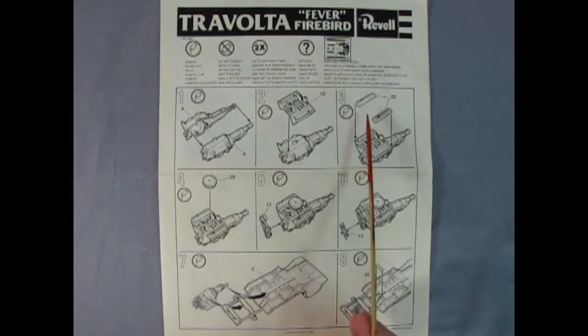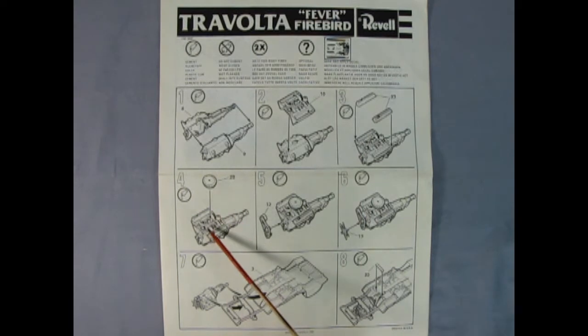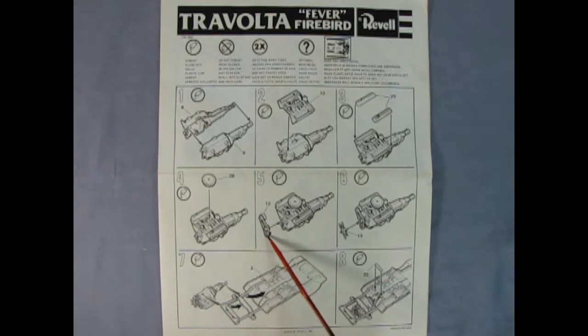Here we have our chrome valve covers dropping in place. We've got our chrome air cleaner dropping on top of our carburetor. Then here we've got our fan belts, pulleys, and alternator with the fan popping in place. The entire engine pops up into the chassis from below and then there's a brace that goes over the rear of the transmission.